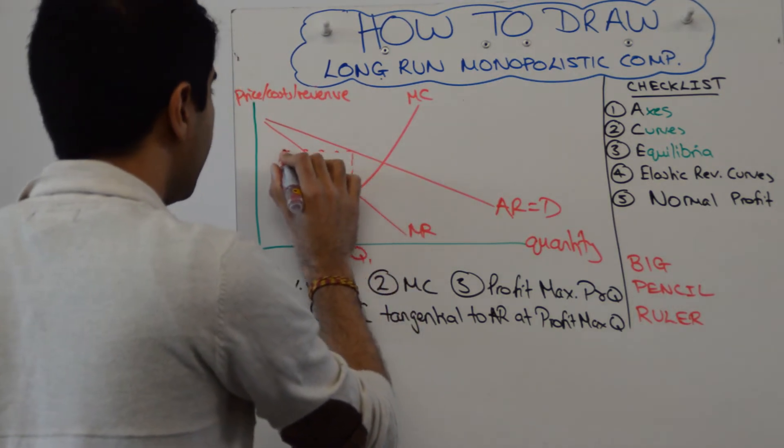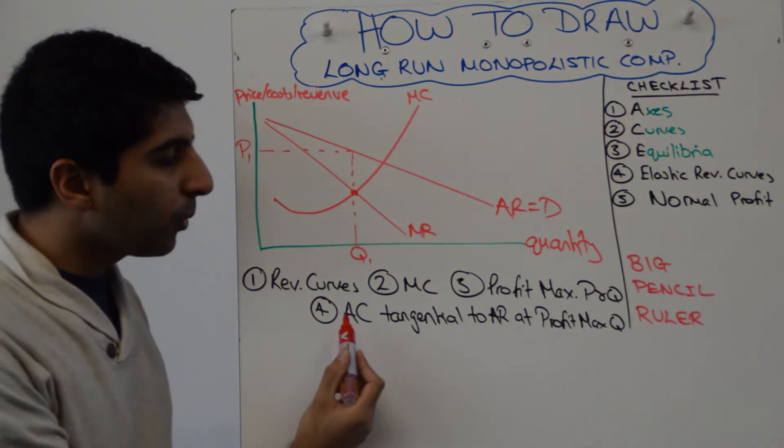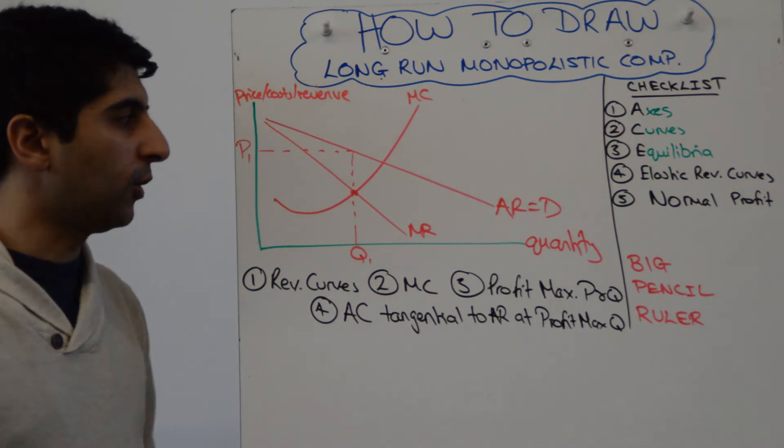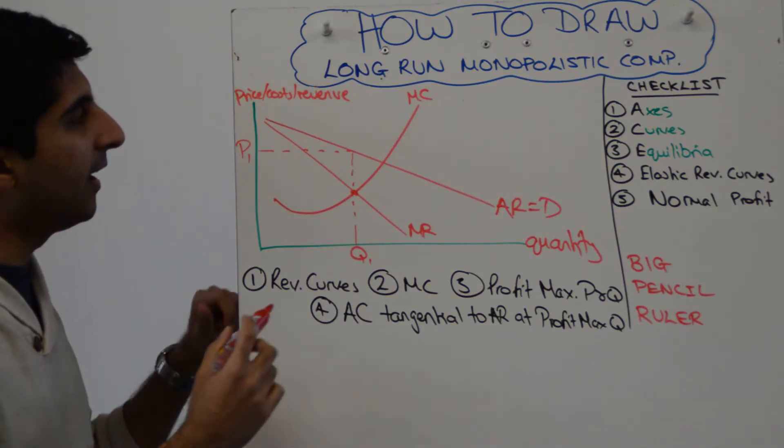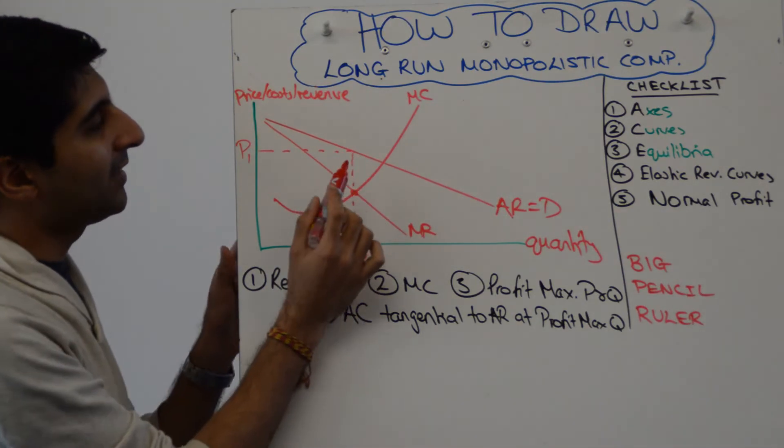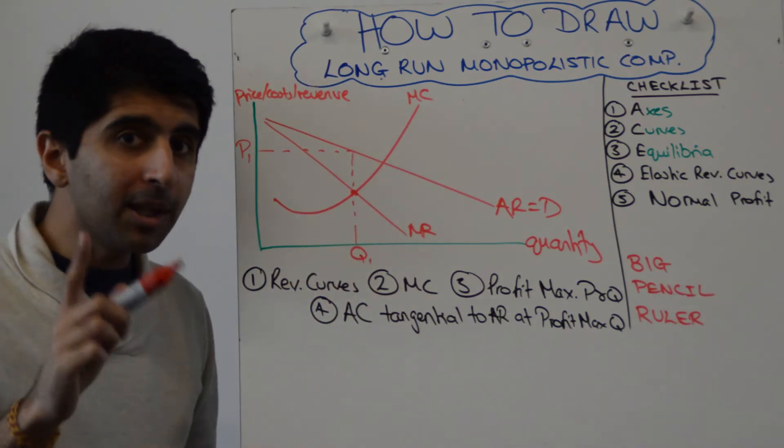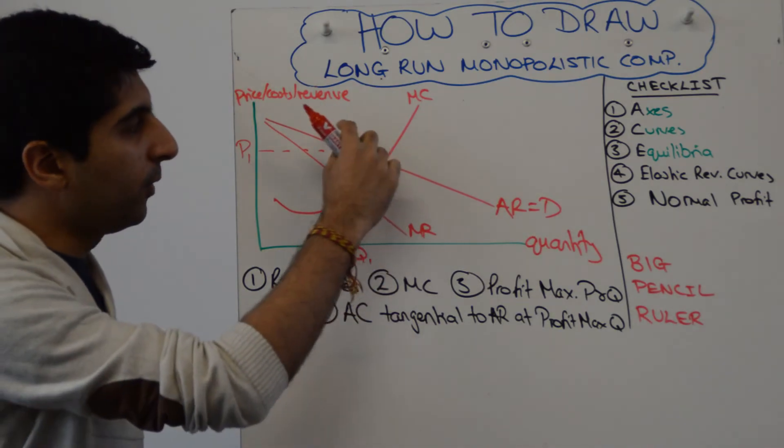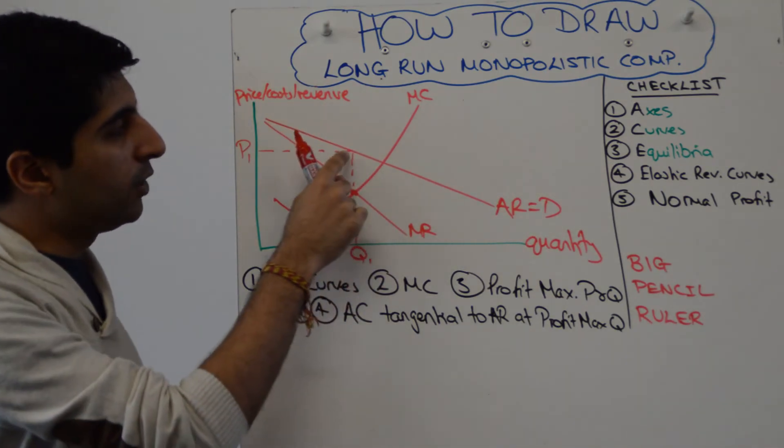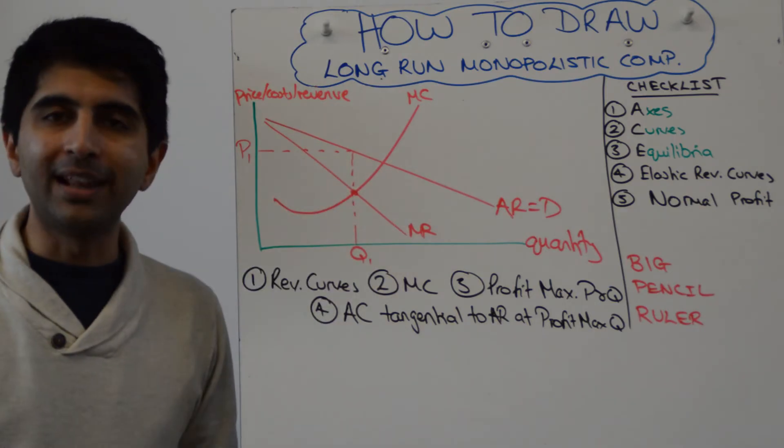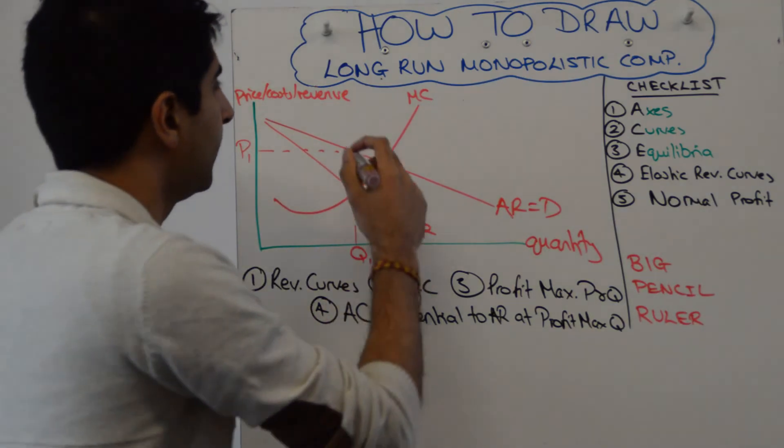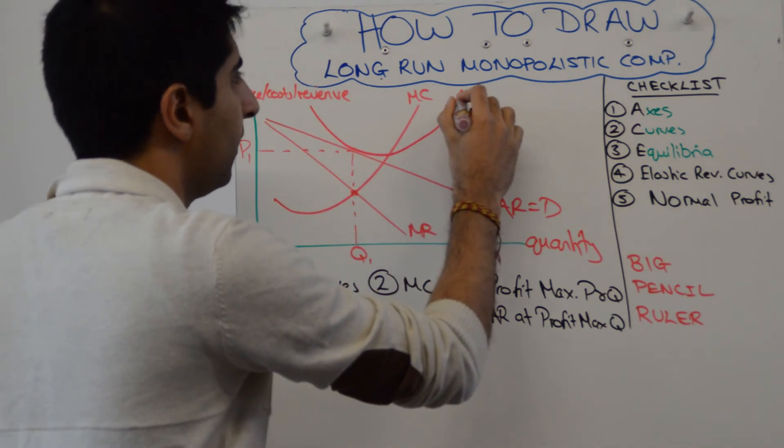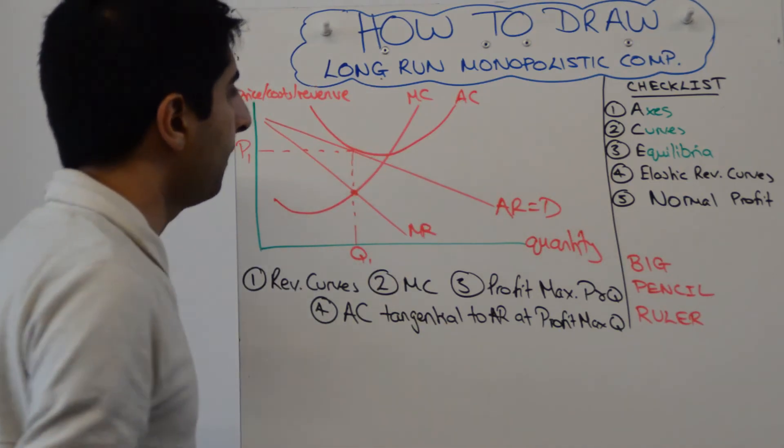Next, what you draw is an average cost curve that's tangential to average revenue at the profit maximizing quantity. Basically an average cost that touches AR there, but that can't be the minimum. The minimum has still got to cut marginal cost. So we've got to make sure that when we draw the AC tangential at this point, it's not the minimum point. Basically you draw it something like this—down, down, and then minimum like that. That's absolutely perfect.